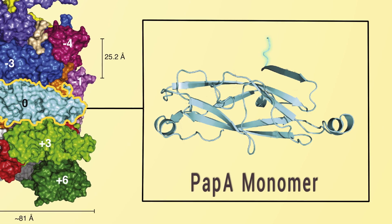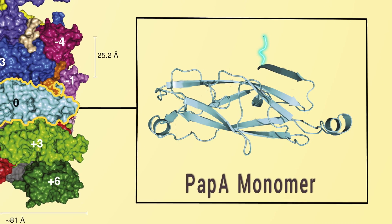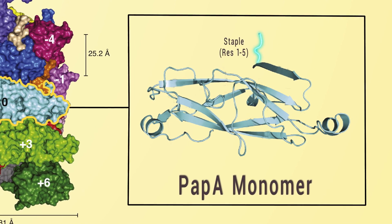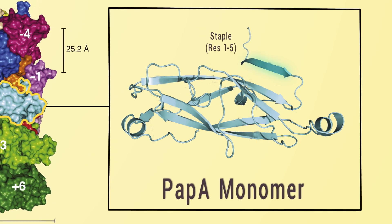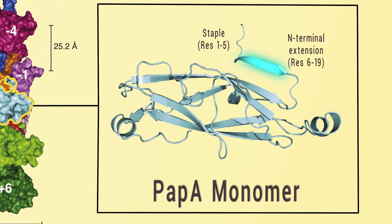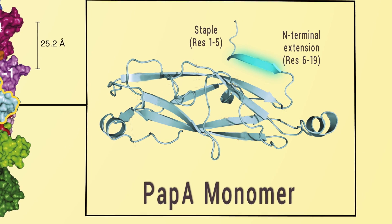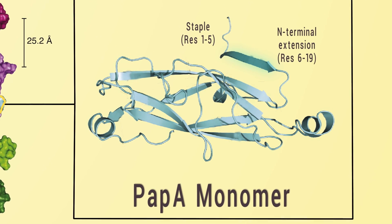From residues 1 to 5, the very N-terminal end is termed a staple because of the multiple interfaces it makes with other subunits. The complementing N-terminal extension strands start from residue 6 and end at residue 19 and insert into the groove of the adjacent subunit.